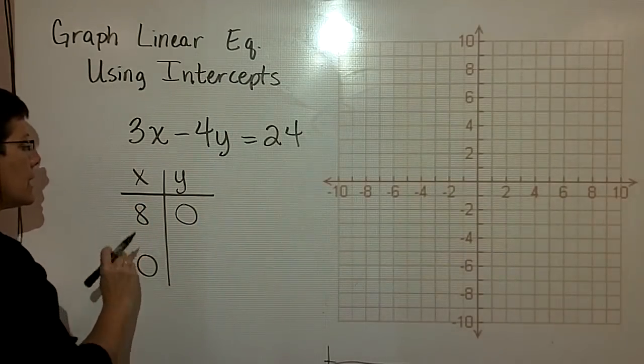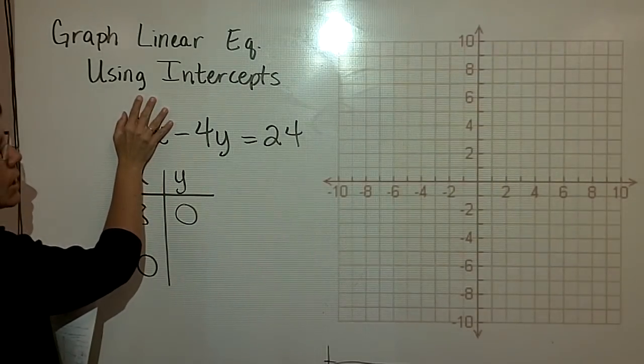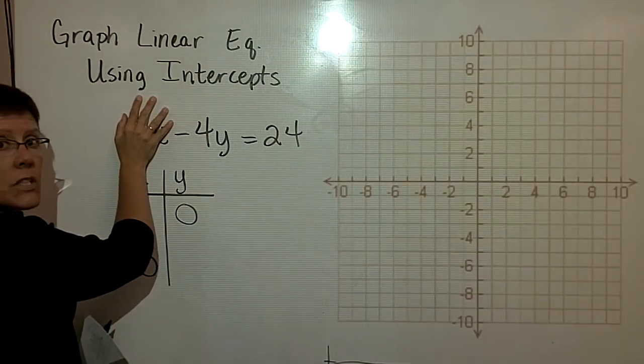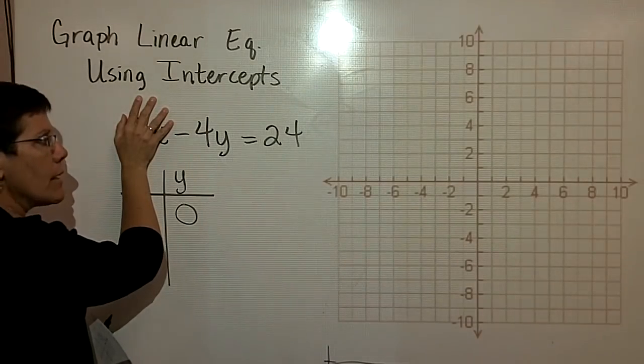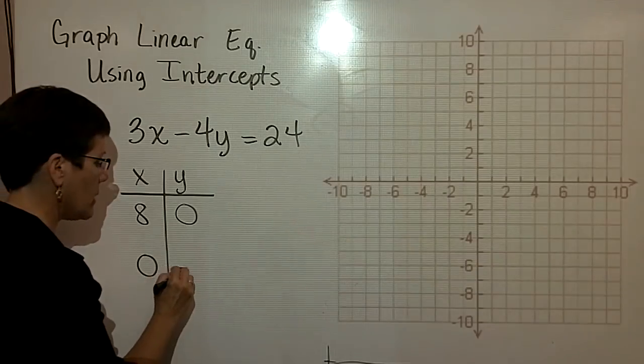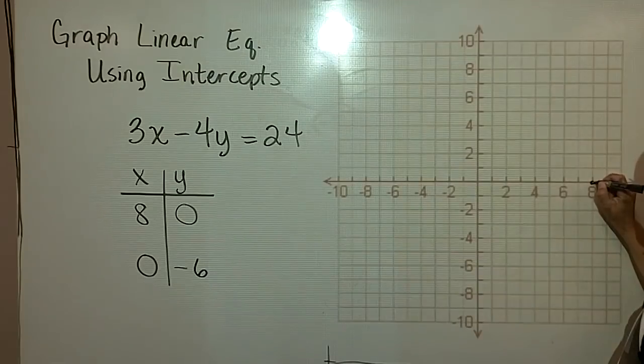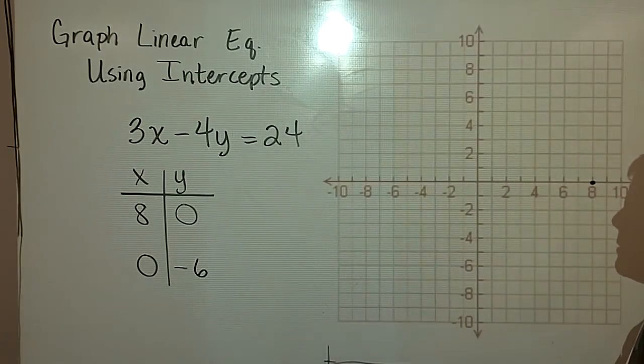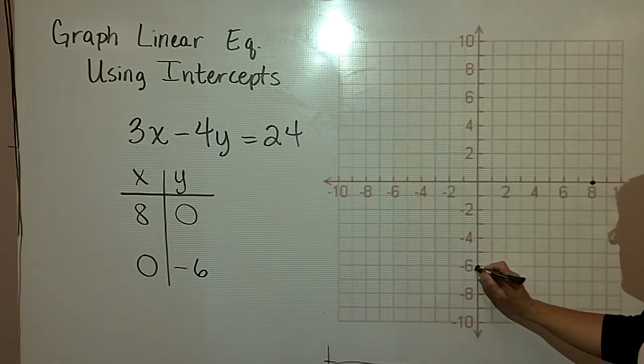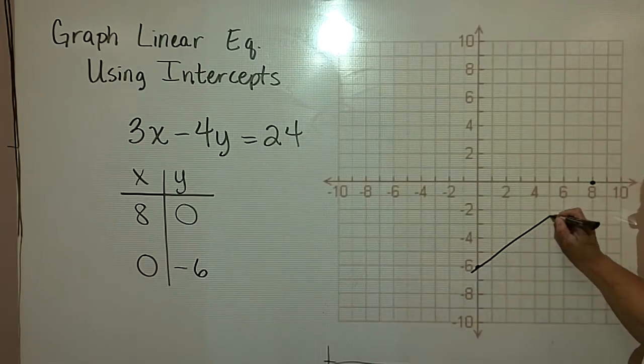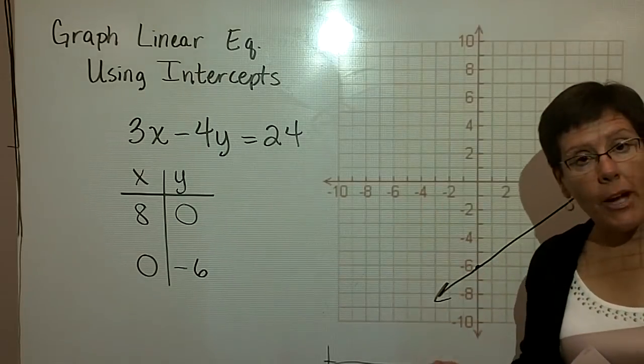So I go ahead and put the 8 in here. And when x is zero, 3 times zero right here is nothing, so that's gone. I divide both sides by a negative 4, and I find out that y is equal to a negative 6. So I put this negative 6 in here, and then I'll go ahead and plot these two ordered pairs. So when x is 8, y is zero is right there. When x is zero and y is a negative 6 is right there. Again, I typically get my straight edge out, but I'm trying to do a reasonable job drawing a straight line. And I've graphed this linear equation.